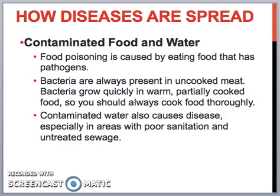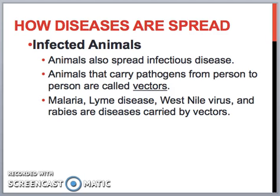There's also contamination by food and water. That's why people say don't share food with someone who's sick. People can also get food poisoning because there are pathogens in the actual food — uncooked meats, for example. That's why it's really important to cook your meat thoroughly. Contaminated water is probably one of the biggest ways people get these sicknesses. Infected animals are also a big way diseases are spread — they carry a lot of pathogens. When diseases go from person to person via animals, those animals are called vectors. For example, a mosquito would be a vector.